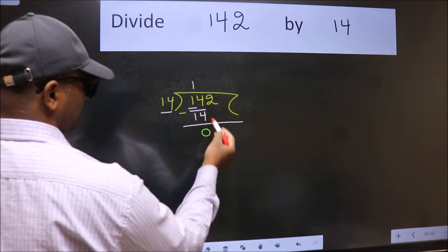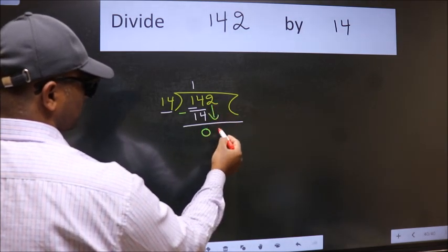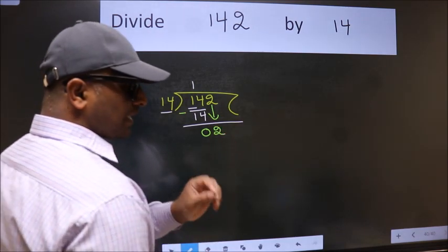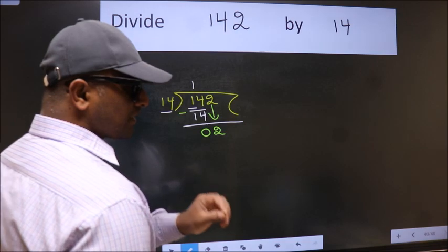After this bring down the beside number. So 2 down. After this step the mistake happens and the mistake is this.